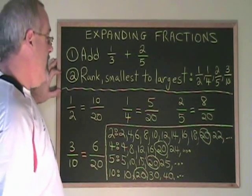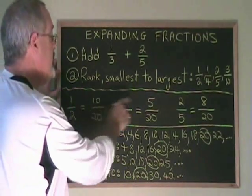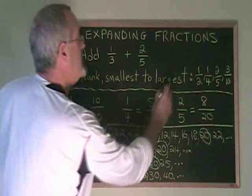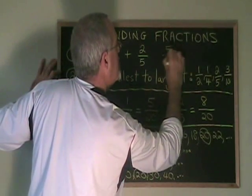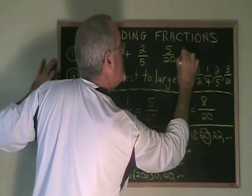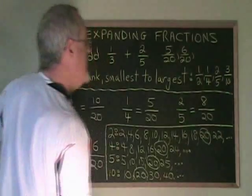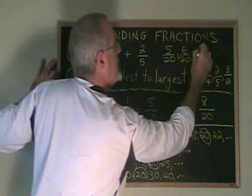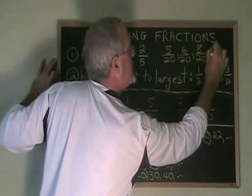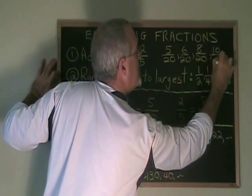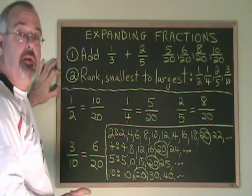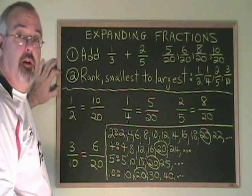Now I can rank my four fractions, now that they're all over the common denominator of 20. The smallest one is 5/20. Then we have 6/20. Third, we have 8/20. And finally, we have 10/20.